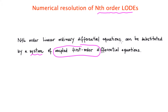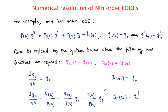We will demonstrate this transformation using the example of a second-order linear ordinary differential equation. As we have seen before, this is the general expression for the second-order ODE, along with two initial conditions. When the functions p, q, r, and h are constants, we can solve it analytically, but if they are not constants, that is extraordinarily difficult. However, we can rely on numerical methods for any p, q, r, or h functions depending on time — and that's really interesting.